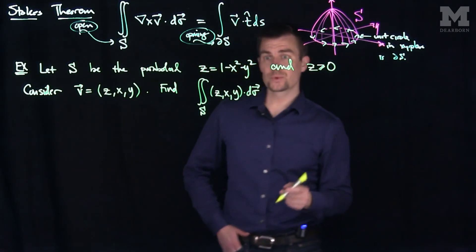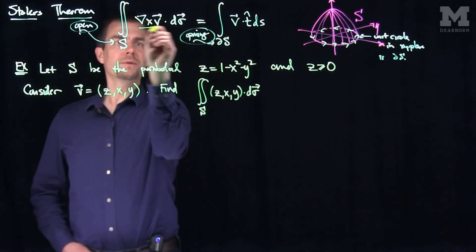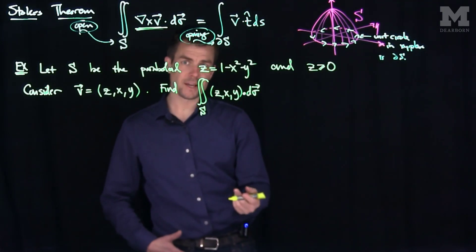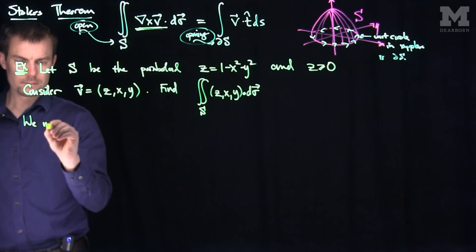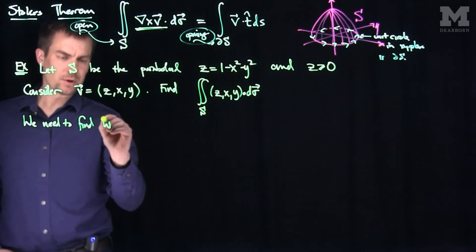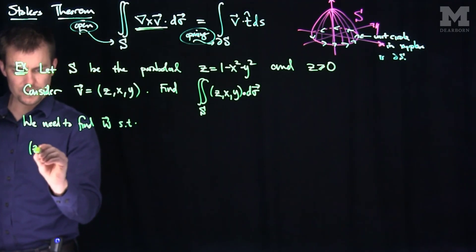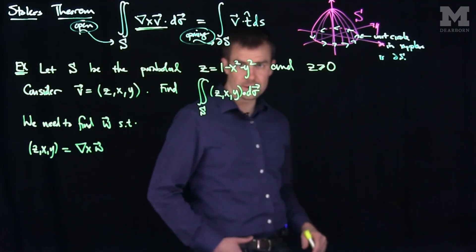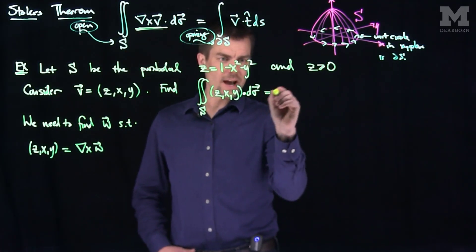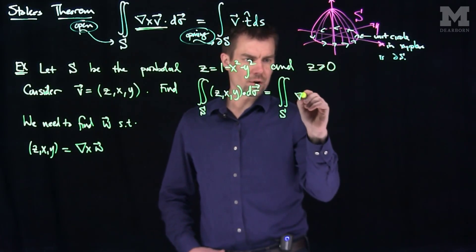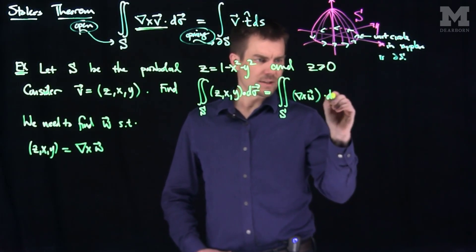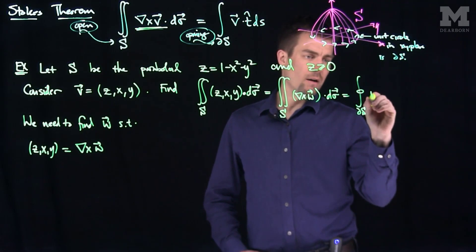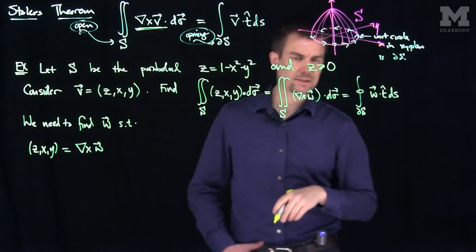We'd like to apply Stokes' Theorem, but our flux integral does not have the curl of something. So what we need is to find a vector field W such that (z, x, y) equals the curl of W. Once we find W, we can replace (z, x, y) with curl(W), and this becomes the surface integral over S of curl(W) dot d-sigma, which equals the flow over the boundary — the unit circle — of W dot t-hat dS.